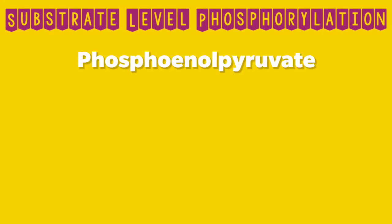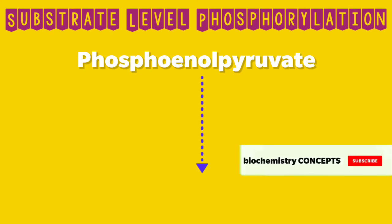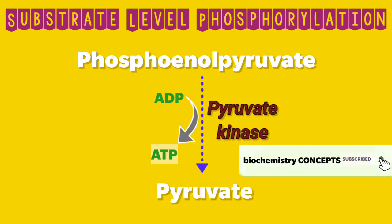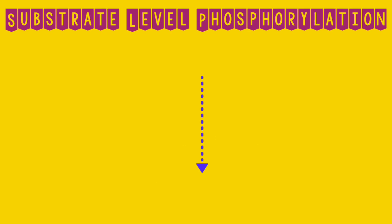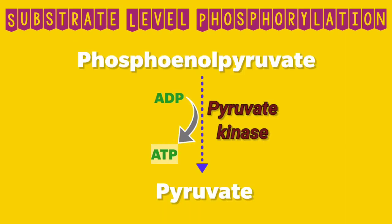In the second example, phosphoenolpyruvate is converted into pyruvate. Again, the high energy phosphate is transferred to ADP to form ATP. Both the 1,3-bisphosphoglycerate reaction and the phosphoenolpyruvate reaction take place in glycolysis.